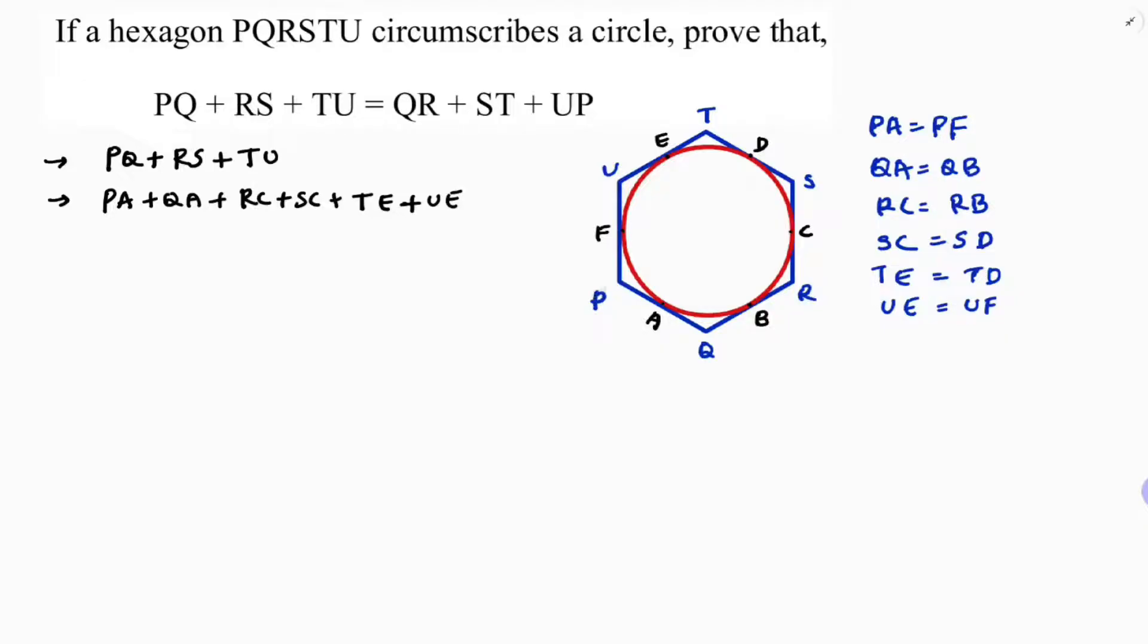See, tangent from external point P. Here if you see, PA equals PF, QA equals QB, then RC equals RB, and SC equals SD, then TE equals TD, and UE equals UF. So what all you need. So for that I change this one. Now I will change all the values here. PA I will add as PF, because for this all, the reason is length of the tangents drawn from external point are equal.